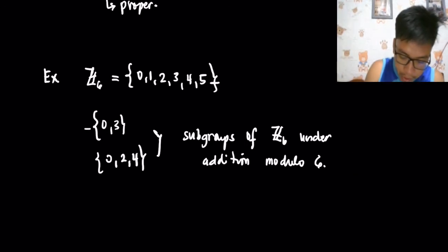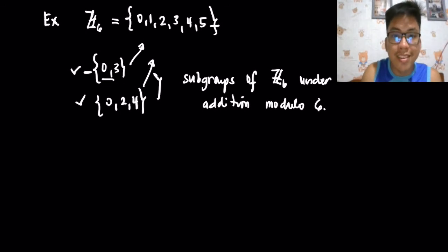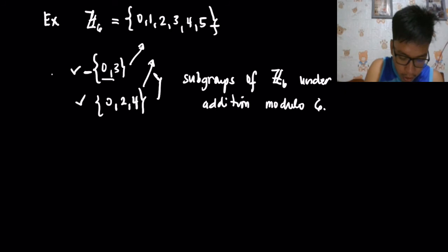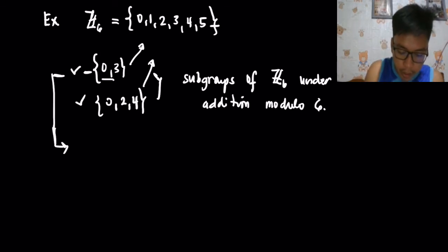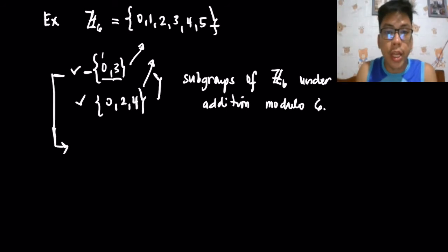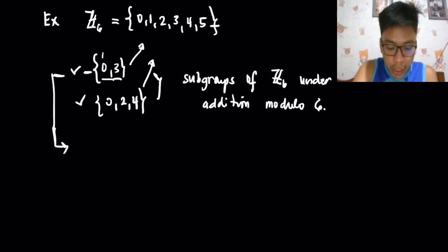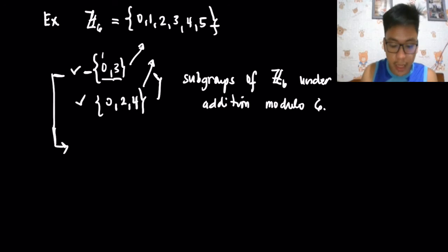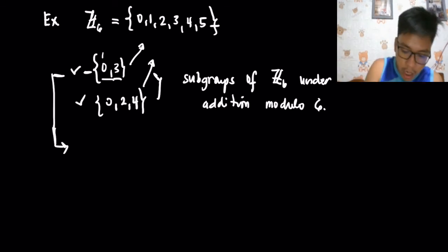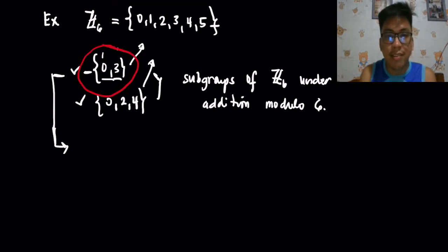Both sets are subsets of Z6 since all their elements are found in Z6. Now we need to check whether they are groups. For the set {0, 3}: 0 is the identity element. For 3, the inverse of 3 is 3, because 3 + 3 = 6, and 6 is congruent to 0, which equals the identity. Associativity is inherited from Z6. So this is a group, and therefore {0, 3} is a subgroup of Z6.